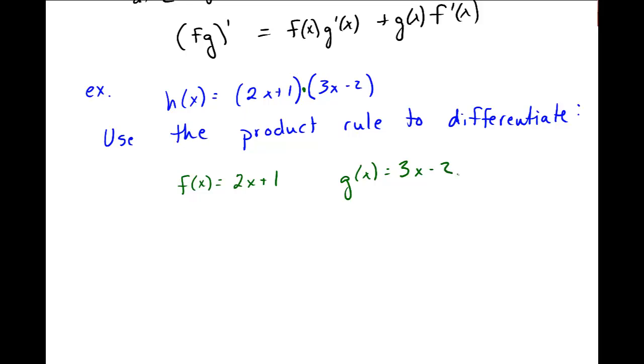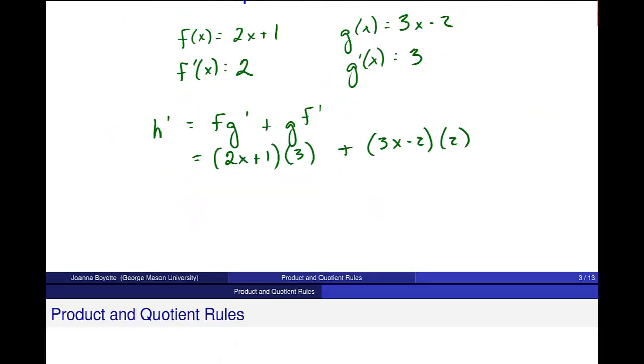And I need the derivatives of both of those individually before I move on. So the derivative of f of x: the derivative of 2x is just 2, the derivative of 1 is 0. The derivative of g of x is equal to just 3. So now h prime, the derivative of h, is f times g prime plus g times f prime. So I'm going to put these into the roles that they should play. 2x plus 1 times the derivative of g, which is 3, plus g, which is 3x minus 2, times the derivative of f, which is 2.